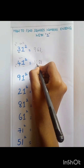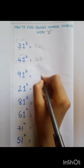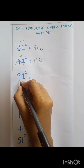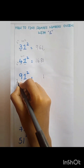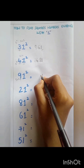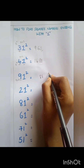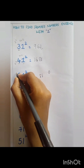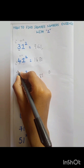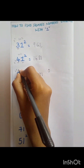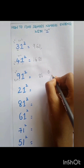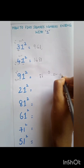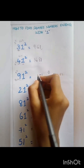Then 91 squared. The unit digit always is 1. Then 9 should be multiplied with 2, that is equal to 18. 1 shall be carried; 8 will be placed in the tens place. Then we should square the 9, that is equal to 81. 81 plus the carried number is equal to 82. Therefore 91 squared is equal to 8281.